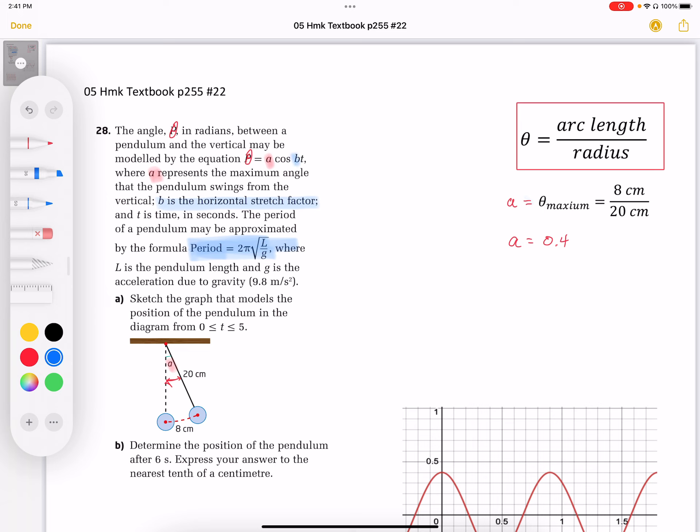Those are the only two unknown parts of this expression. And B is to do with the horizontal stretch factor, which relates to the period. So the period is our horizontal compression expansion. Those things go together.